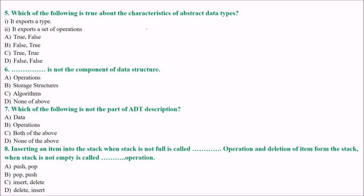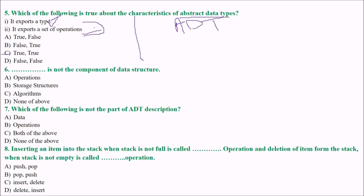Next: which of the following is true about the characteristics of abstract data type? Stacks and queues are abstract data types — they are called abstract because we don't talk about the actual implementation. The answer is C: it exports a type and it exports a set of operations. An abstract data type is a mathematical model for storing or organizing data with a certain set of operations defined on it.